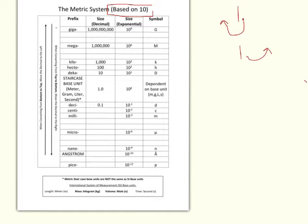Compare that to the English system: a cup is eight ounces, a pint is 16, a gallon is 128 — these are not easy numbers to work with. In length we have 12 inches to a foot, inches are in sixteenths, and there are 5,280 feet in a mile. They're just ridiculous numbers to work with. Metric is so much easier.